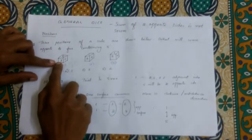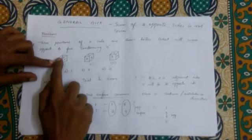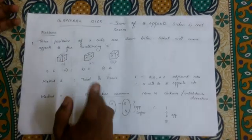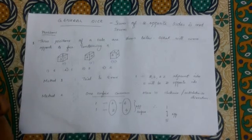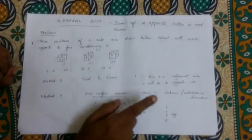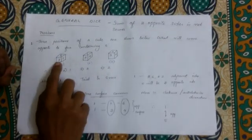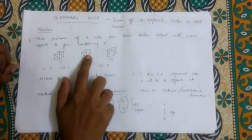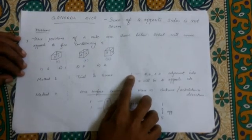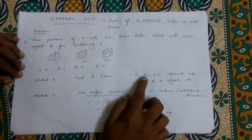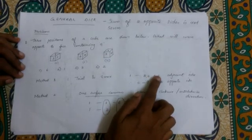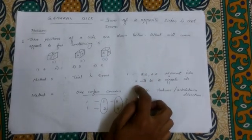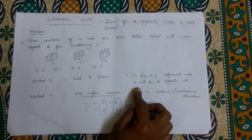Using the trial and error method: In the first figure, 1 is on one face, and its adjacent sides are 3 and 6. So 3 is not the opposite of 1. In the second figure, 4 and 2 are shown — 1 is opposite to those. Going through faces 3, 6, 4, 2 — the remaining face is 5. So 5 is the opposite side.